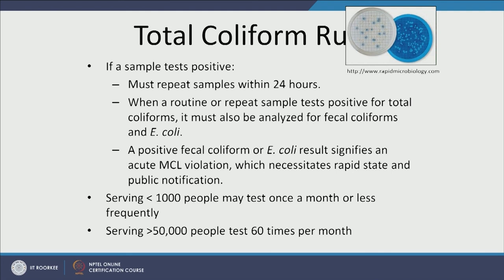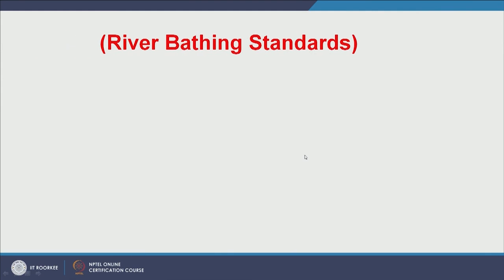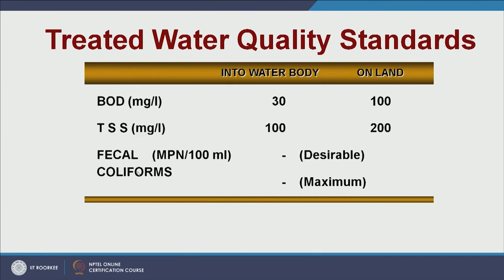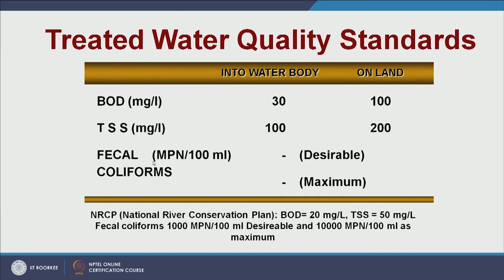There are rules about how frequently these tests must be conducted. For river bathing standards, fecal coliforms should be up to 500 MPN per 100 ml, and total coliforms up to 2500 MPN per 100 ml maximum permissible. For treated drinking water quality standards, fecal coliforms must be zero — none is allowed.